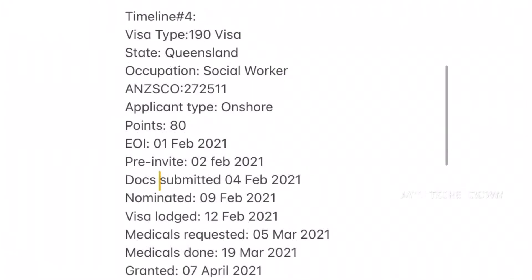Timeline 4 is for visa type 190, state Queensland, occupation social worker, onshore applicant with 80 points. The EOI was submitted on 1st February 2021, a pre-invite was received the next day, documents were submitted on 4th February, and nomination was received on 9th February. The visa was lodged on 12th February, medicals submitted by 5th March, and the grant was received in the first week of April — within just 2 months. It is always recommended to submit all documents to speed up processing time.